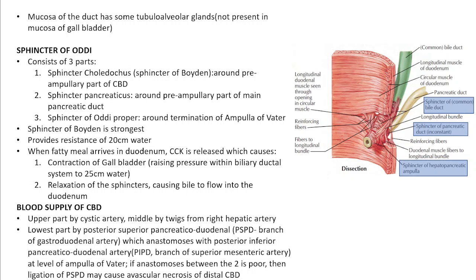Blood supply of the CBD: the supraduodenal part is supplied by the cystic artery and possibly the right hepatic artery. The infraduodenal and intraduodenal parts are supplied by the posterior superior pancreaticoduodenal artery (a branch of the gastroduodenal artery, which comes from the common hepatic artery from the celiac trunk). This anastomoses with the posterior inferior pancreaticoduodenal artery, a branch of the superior mesenteric artery. If this anastomosis is poor, ligation of the posterior superior pancreaticoduodenal artery may cause avascular necrosis of the distal common bile duct.